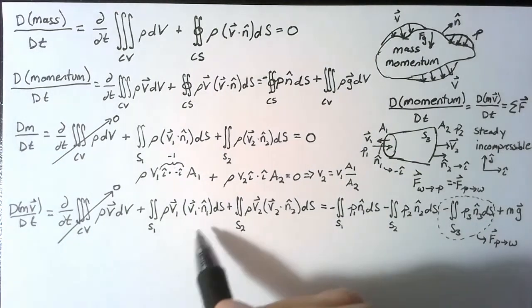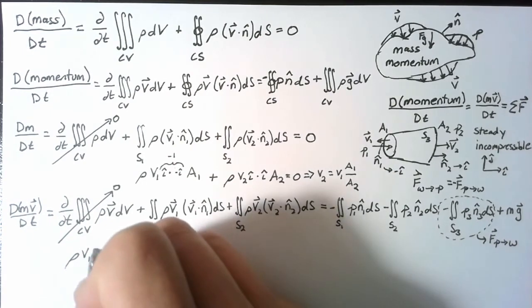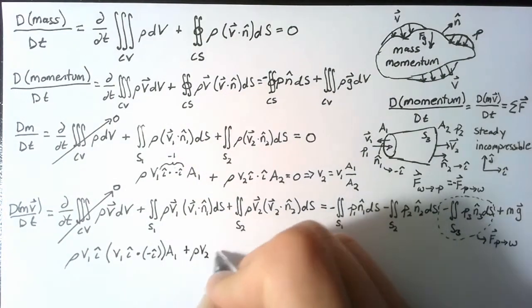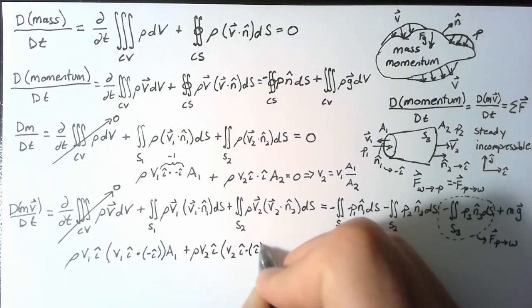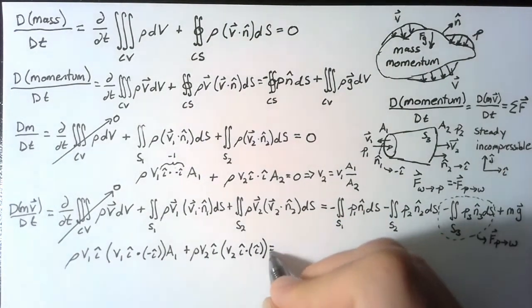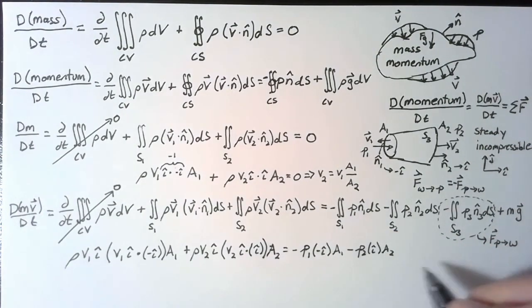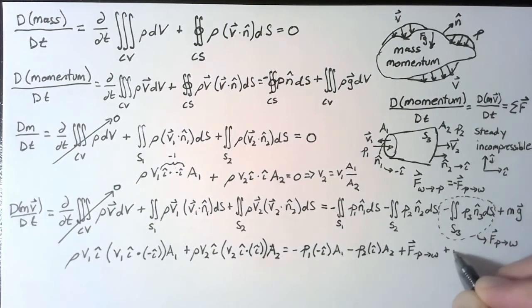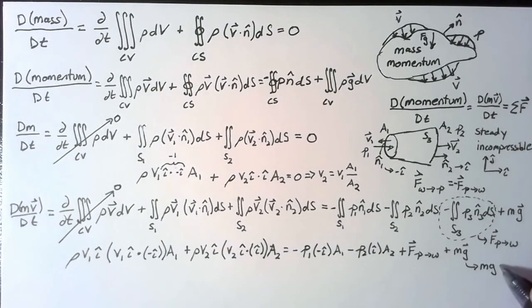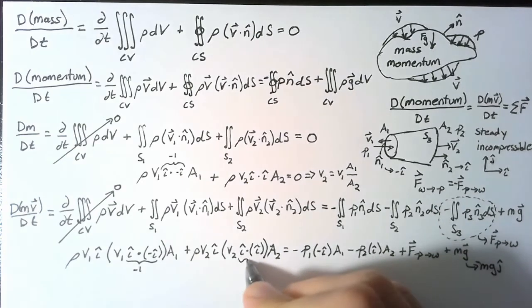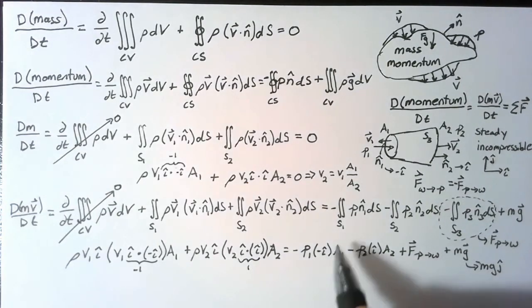Alright, so let's try to evaluate some of these equations. So we have our two convection terms, which look very similar to what we wrote out before. The big difference here is that both of these momentums are in the i direction. Our pressures are also acting in the i direction. The force here is what we're looking for, and then we have mg, which we could also write as mg in the negative j direction. This i dot negative i is negative 1 again. This i dot i is just 1. And then we have things in the i direction, things in the j direction.